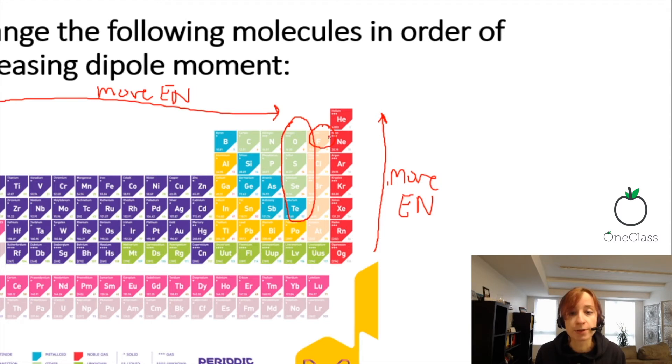With that in mind, tellurium is the least electronegative, then selenium, sulfur, and oxygen being the most.